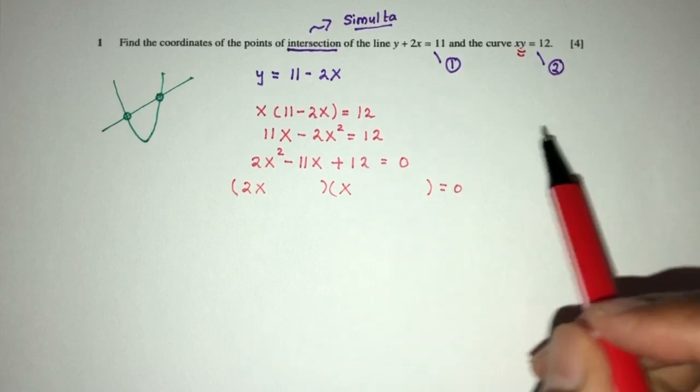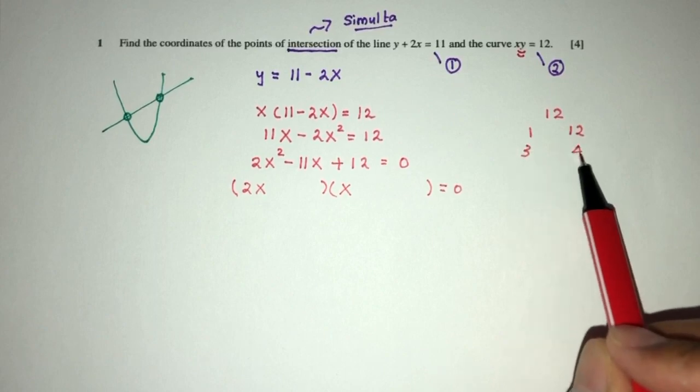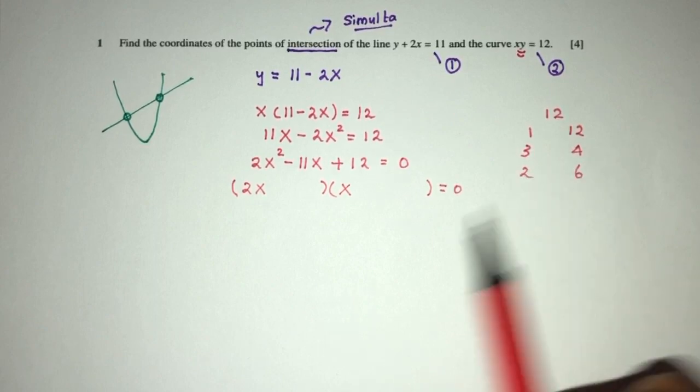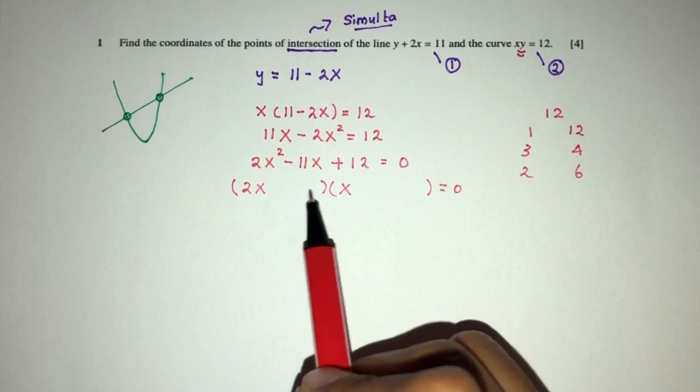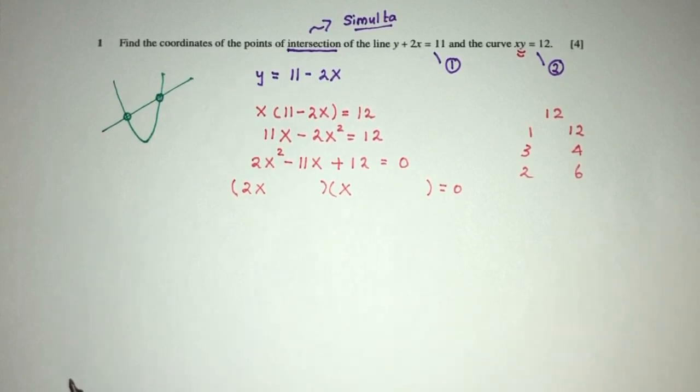Now what is 12? We know 12 can be 1 times 12, 3 times 4, or 2 times 6. We have to choose a pair that fits so we get minus 11x. Let's see which one will fit.